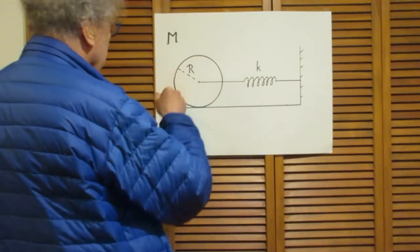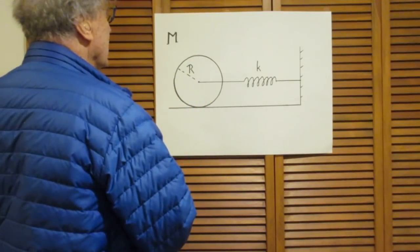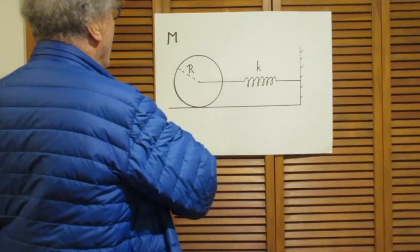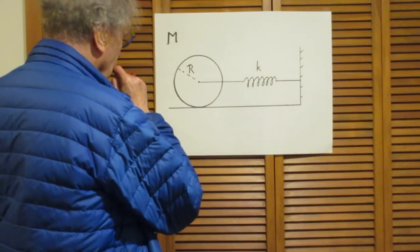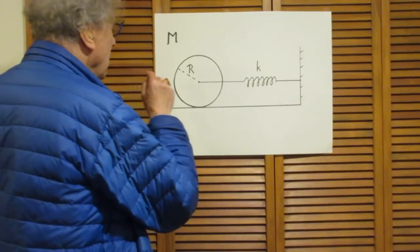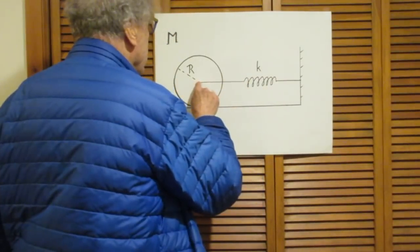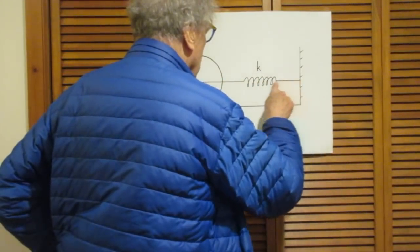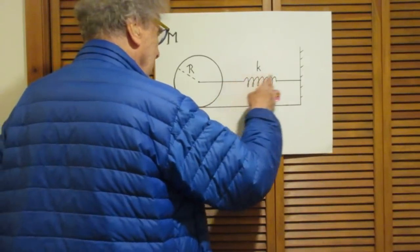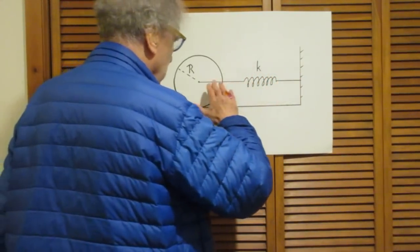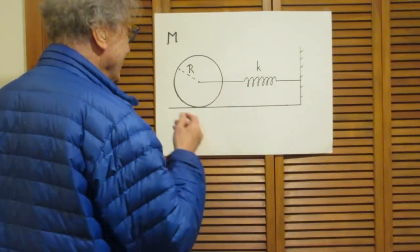This is a solid disk with uniform mass density, mass M and radius R. It is connected at its center to a spring with spring constant K. The spring has such a very low mass that it can be completely ignored — we call that a massless spring.